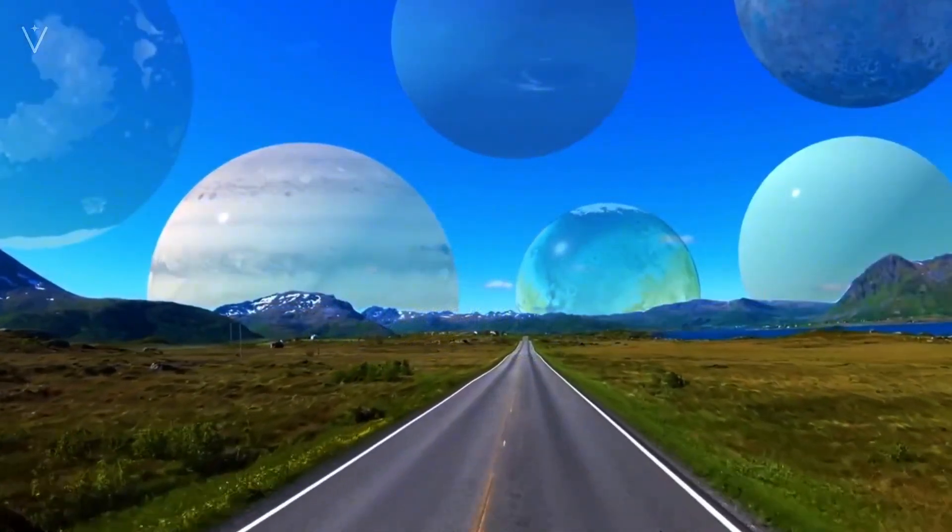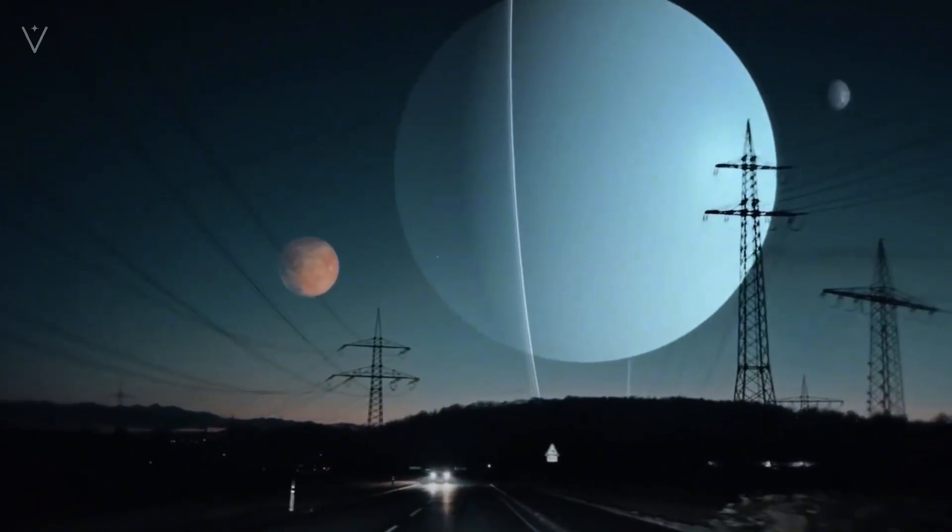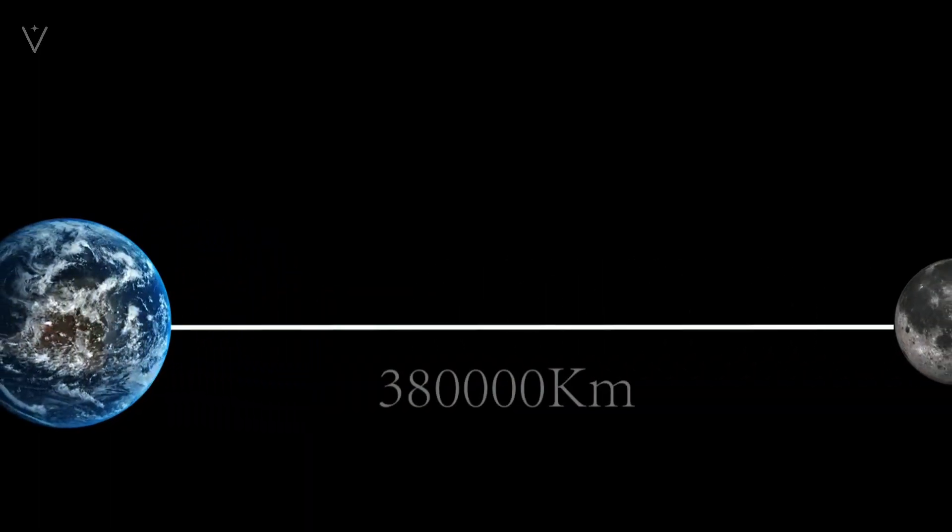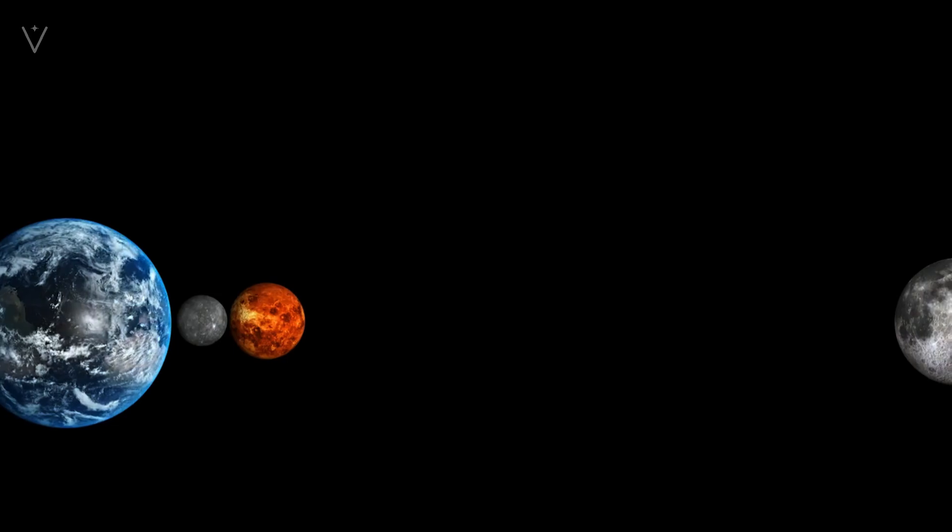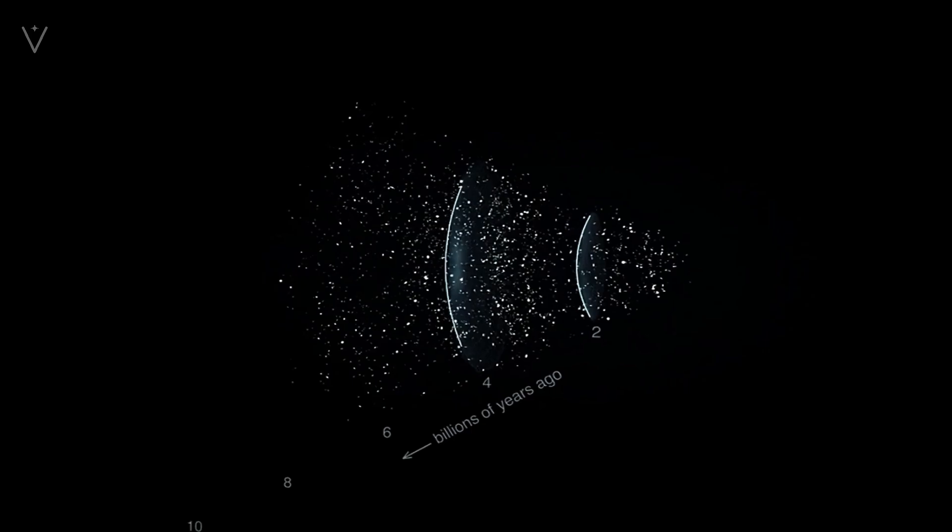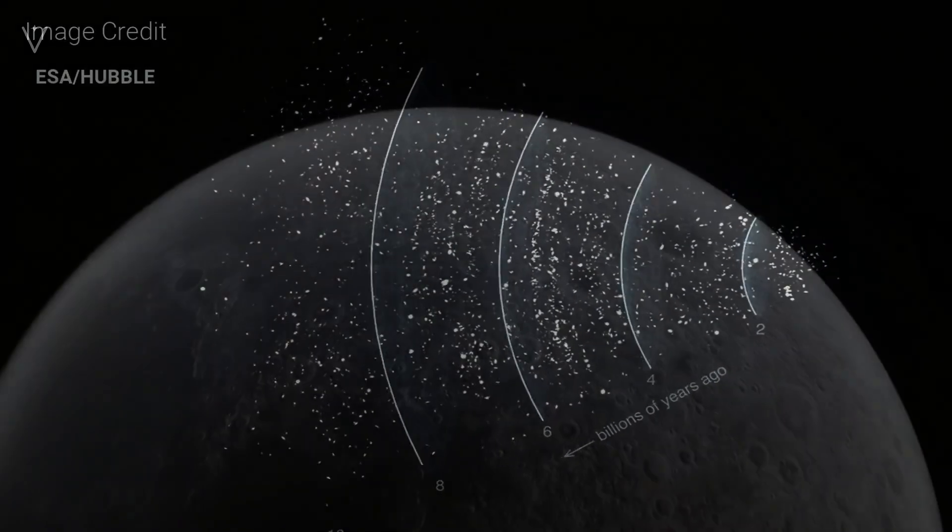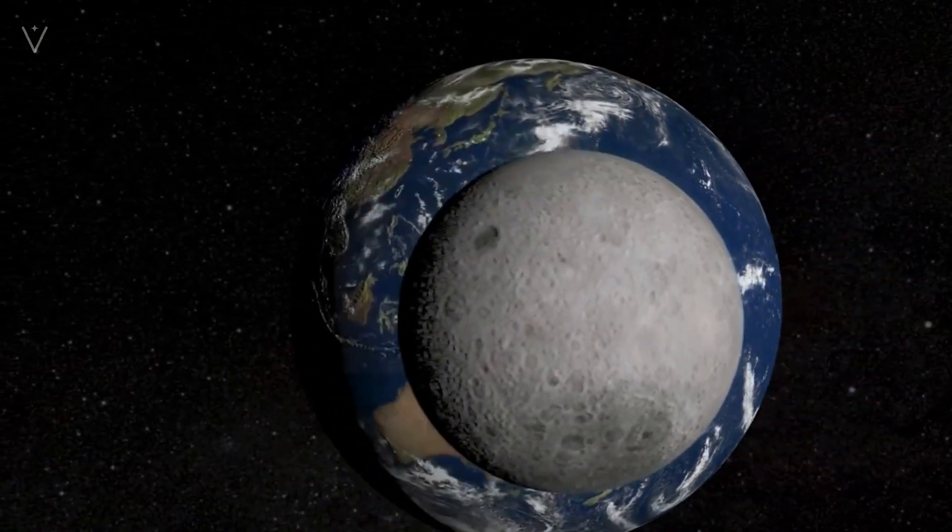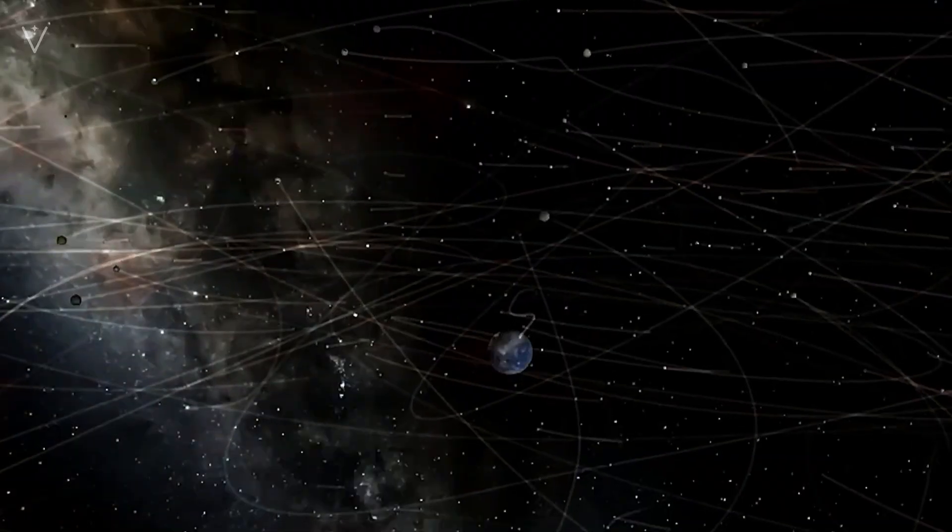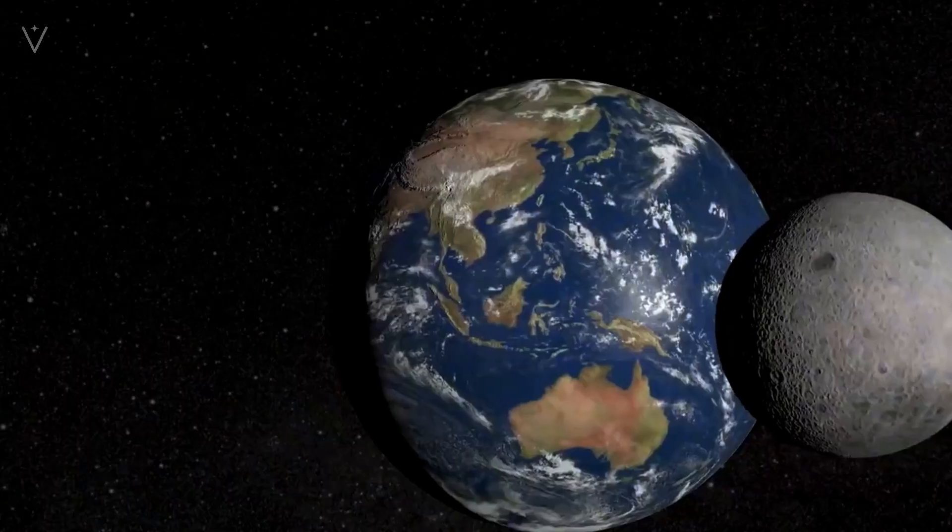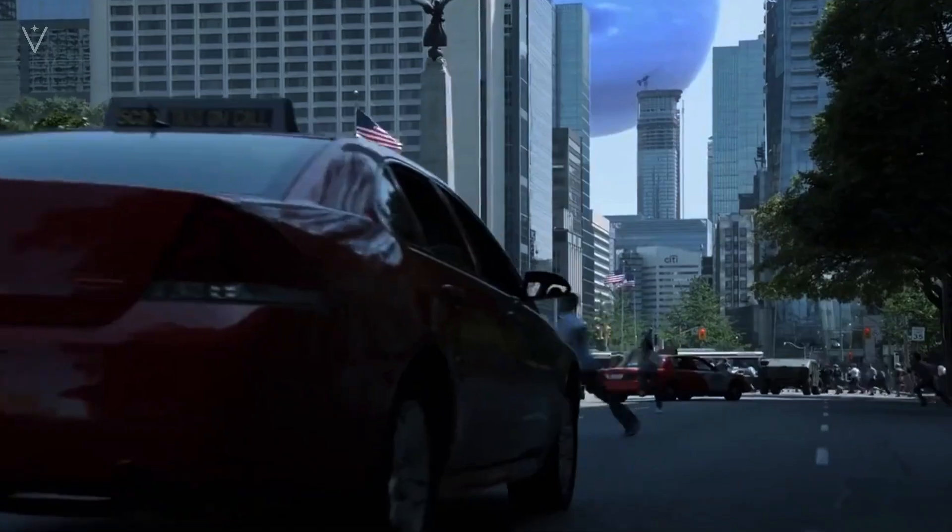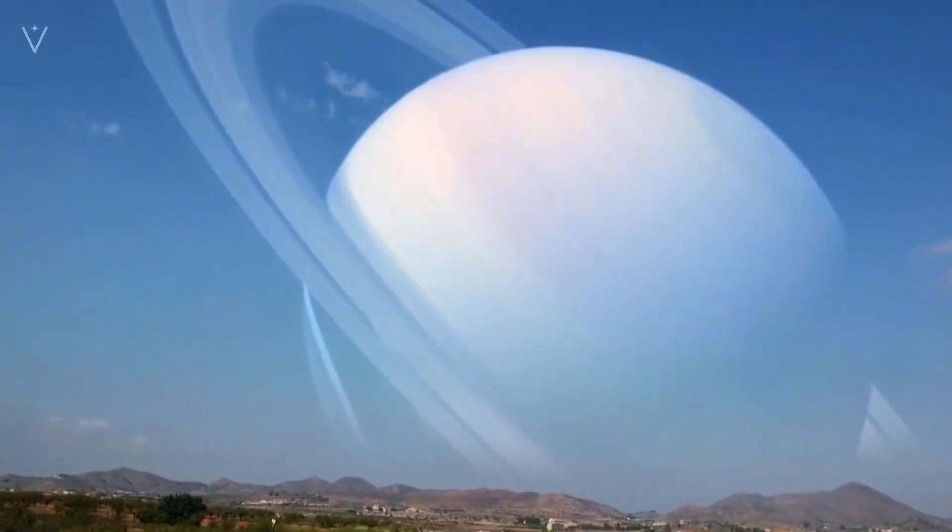Scientists have analyzed the signal of this gravitational wave and found that it is very large. After complex calculations and analysis, it was concluded that at a distance of 1.3 billion light-years from the Earth, one of the black holes has a mass equivalent to 2.9 solar masses and the other black hole has a mass equivalent to 3.6 solar masses. Under the influence of gravity, they revolve around each other for millions of years, and the speed of rotation will become faster and faster, and the distance will become closer and closer.